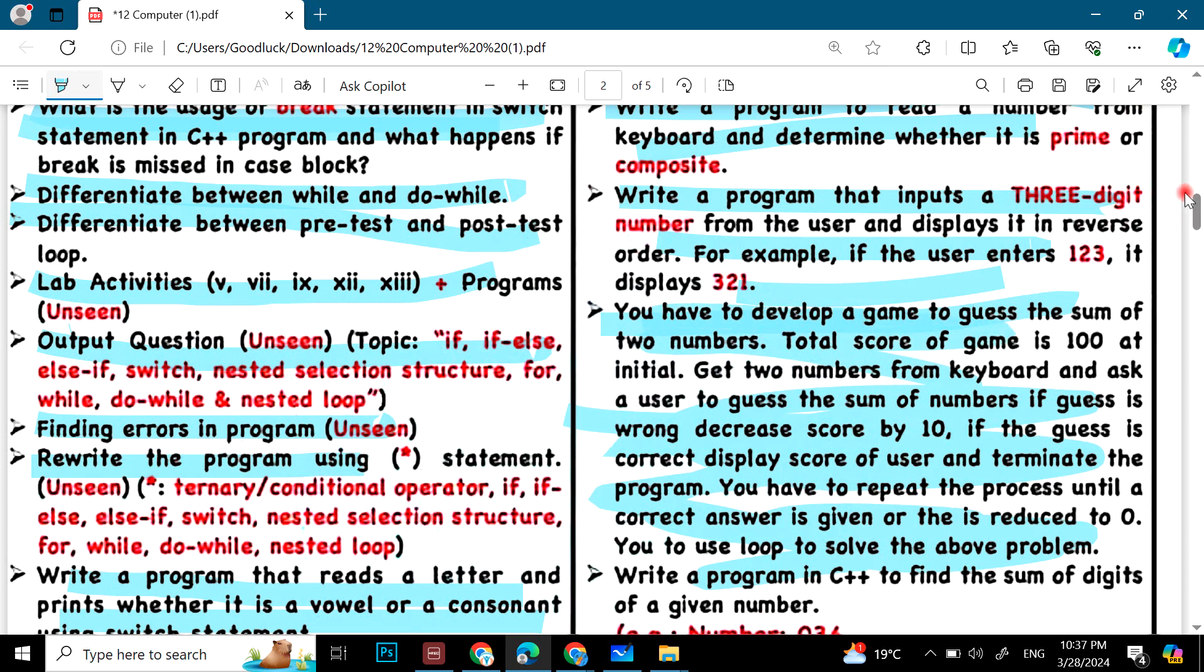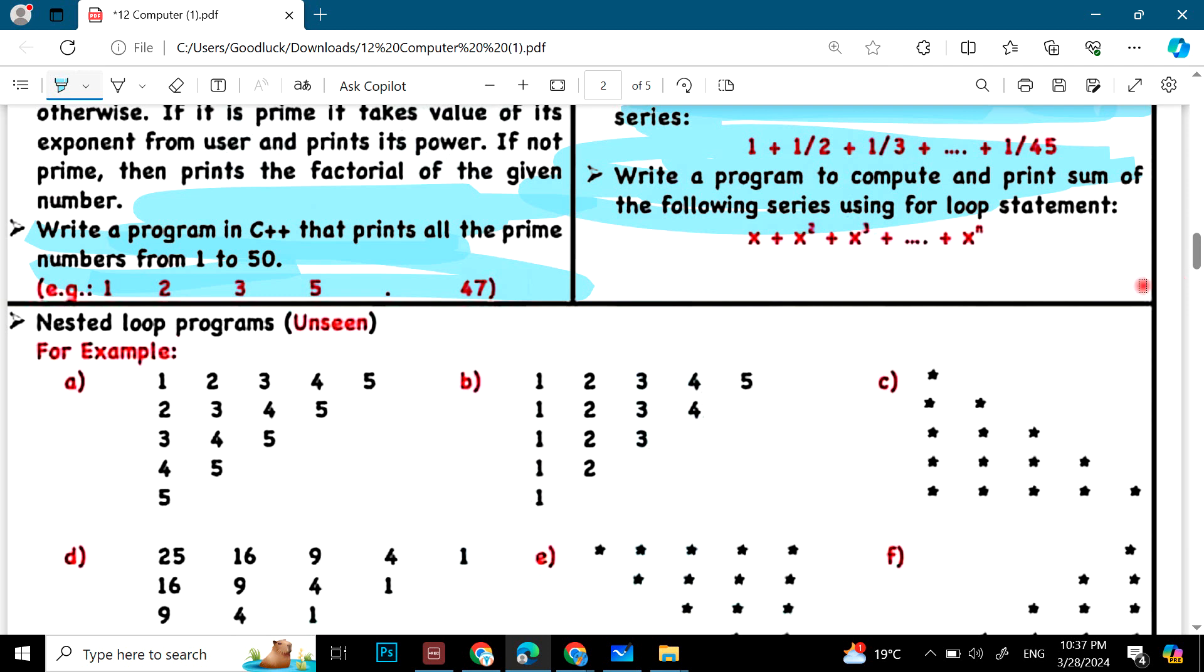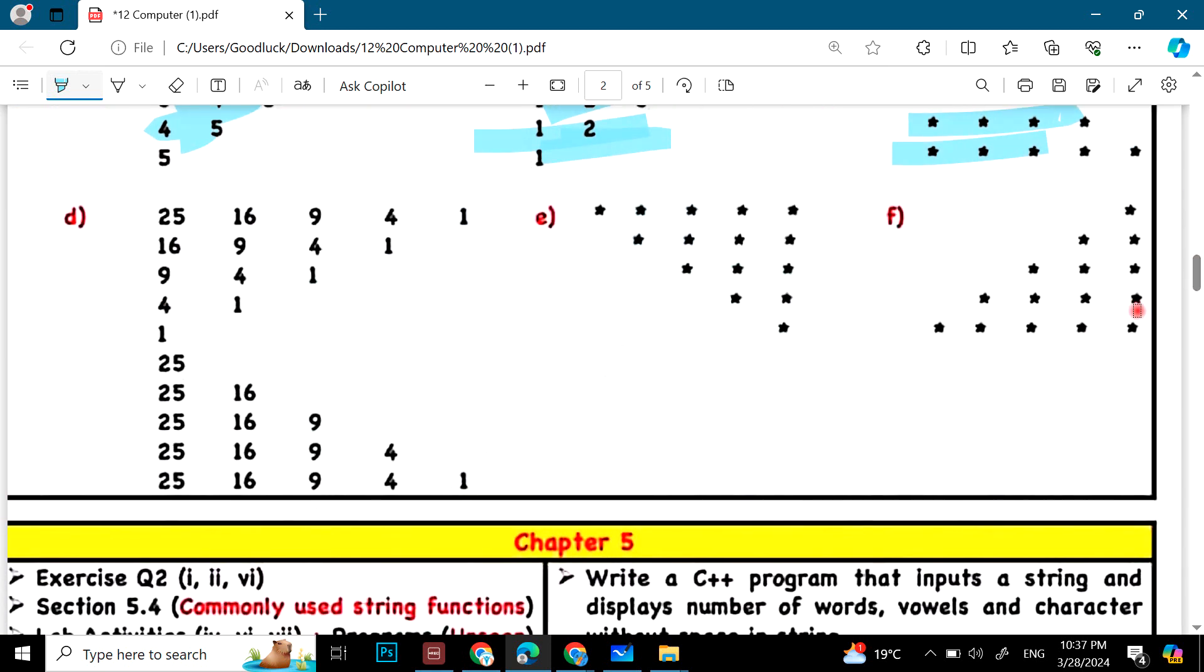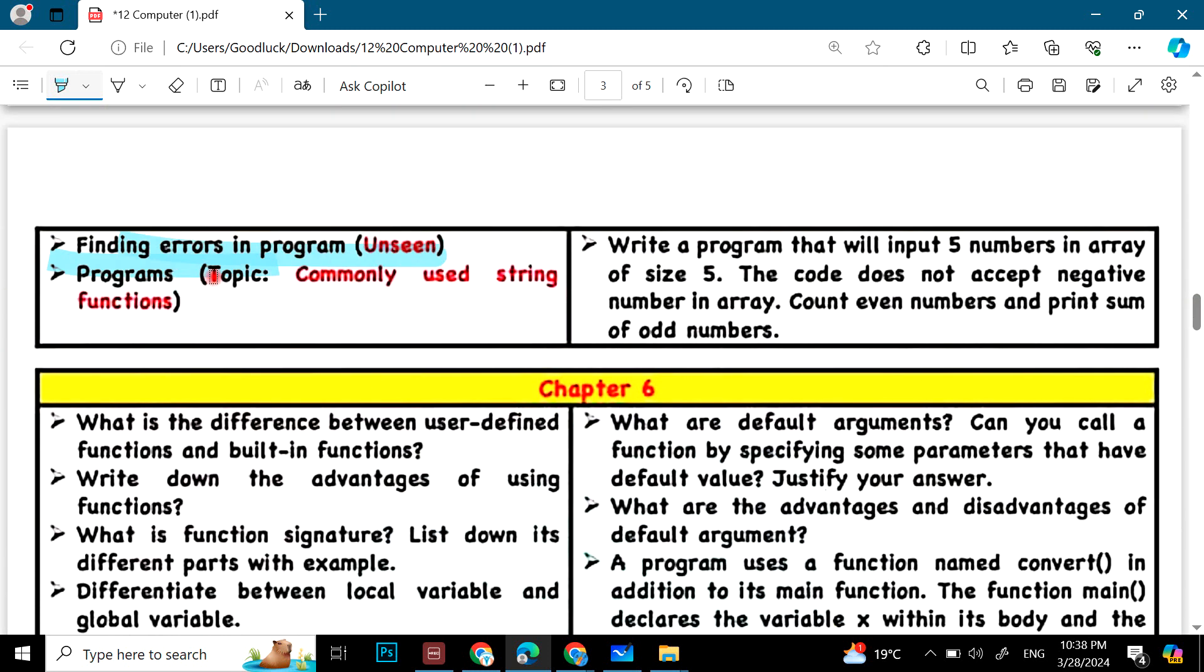There are SLO based papers, of course. So, the value and quantity can also be changed. Chapter 5 Exercise questions section 5.4 Lab activities. Write a program that inputs a string and display a number of words. Then finding errors. Write a program that will input 5 numbers in an array of size 5. The code does not accept a negative number in an array, count even numbers and print sum of odd numbers.